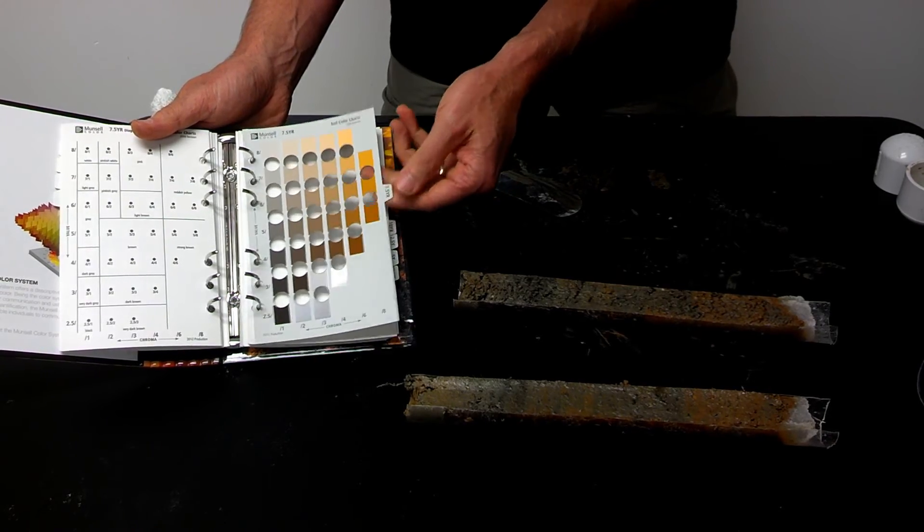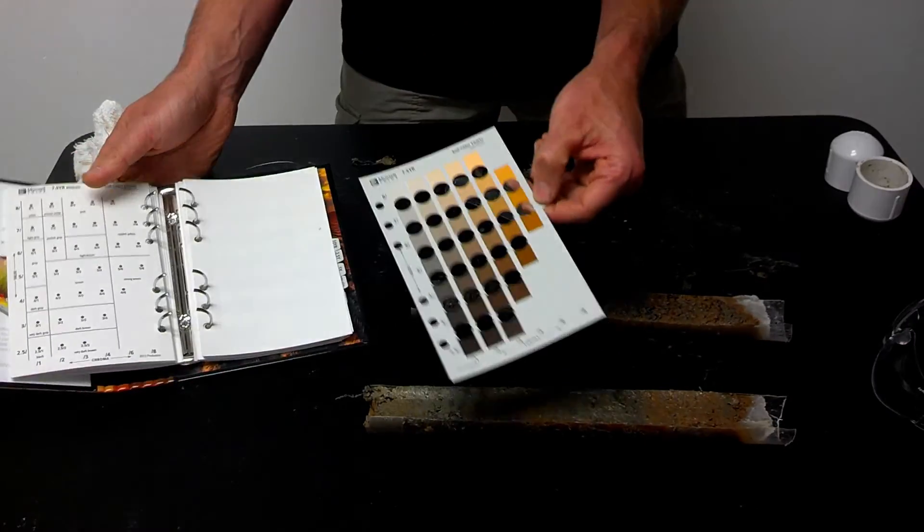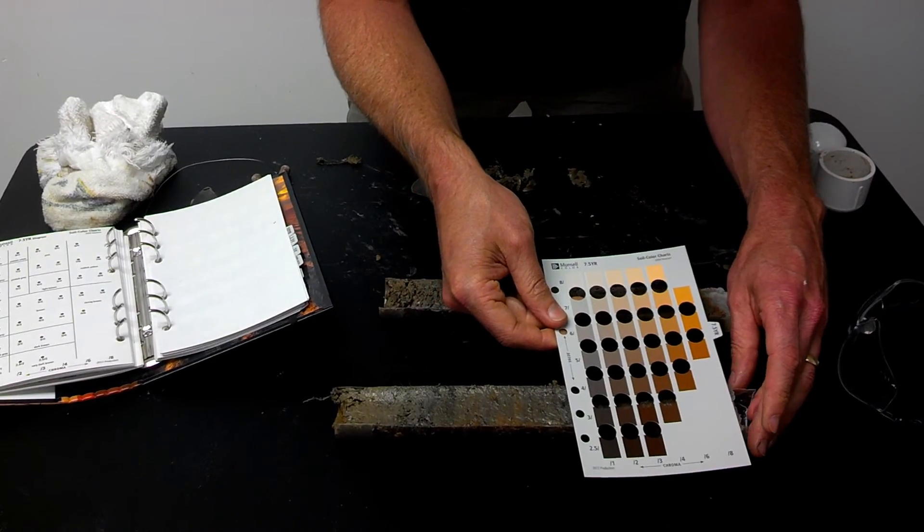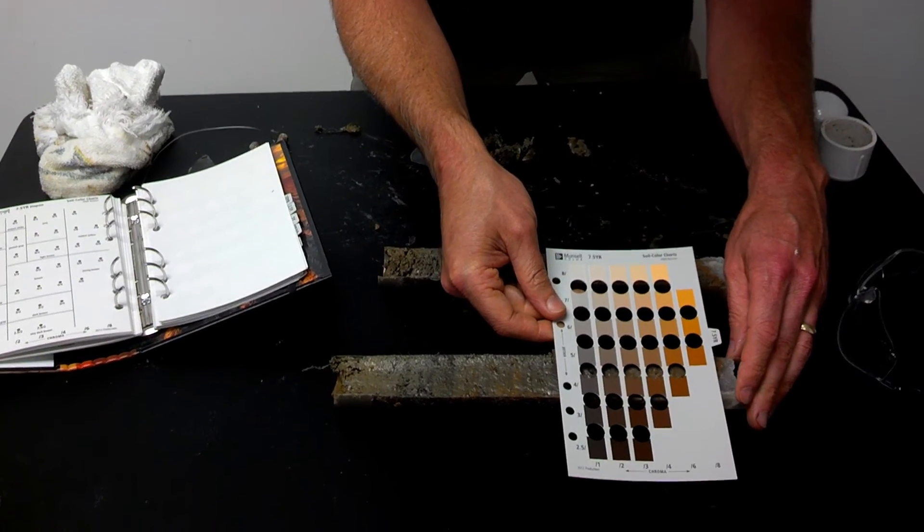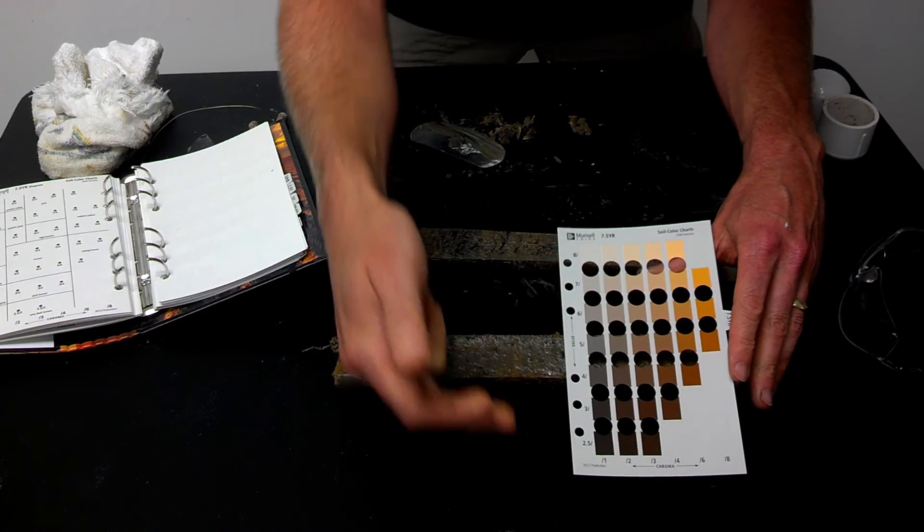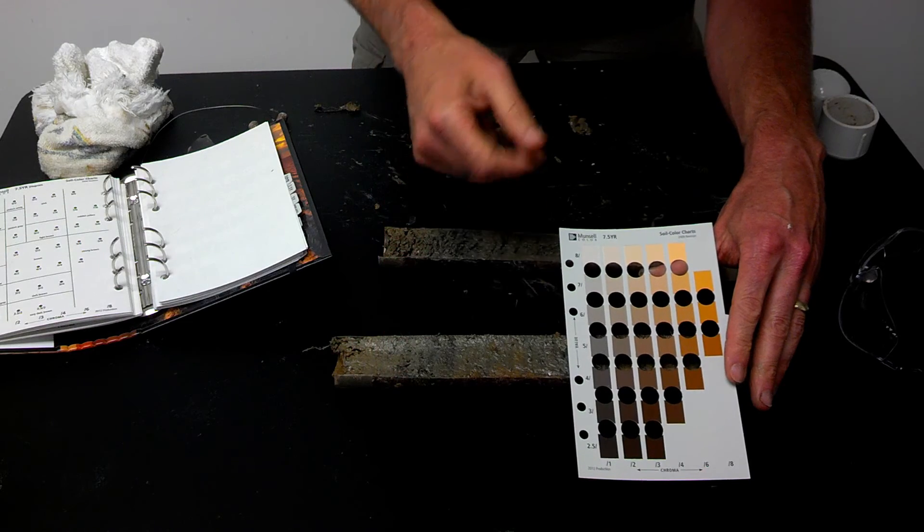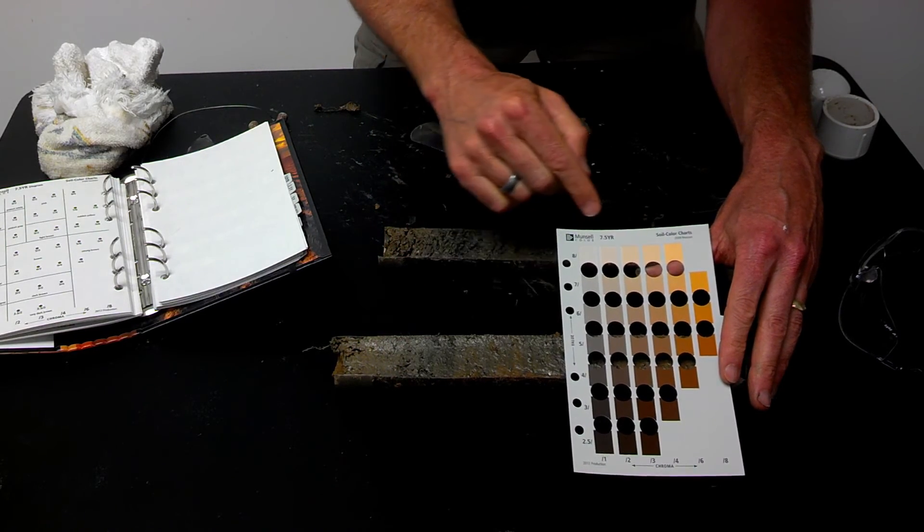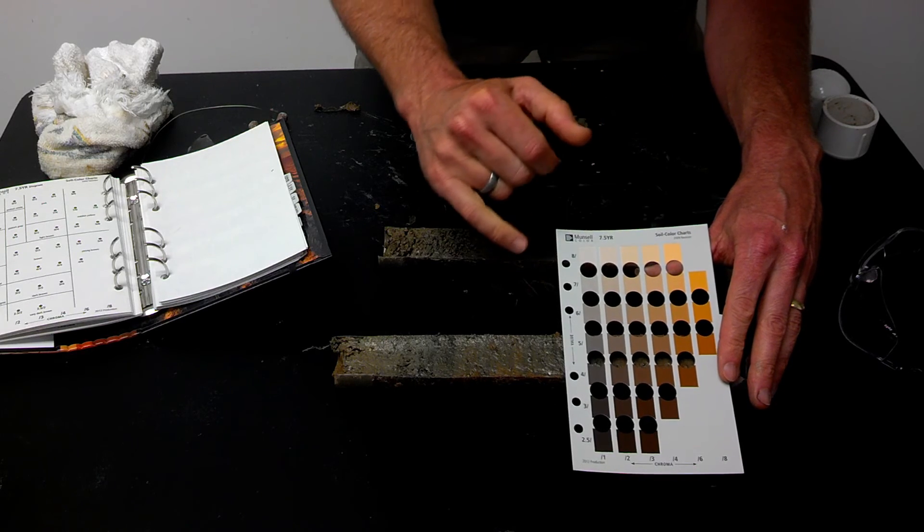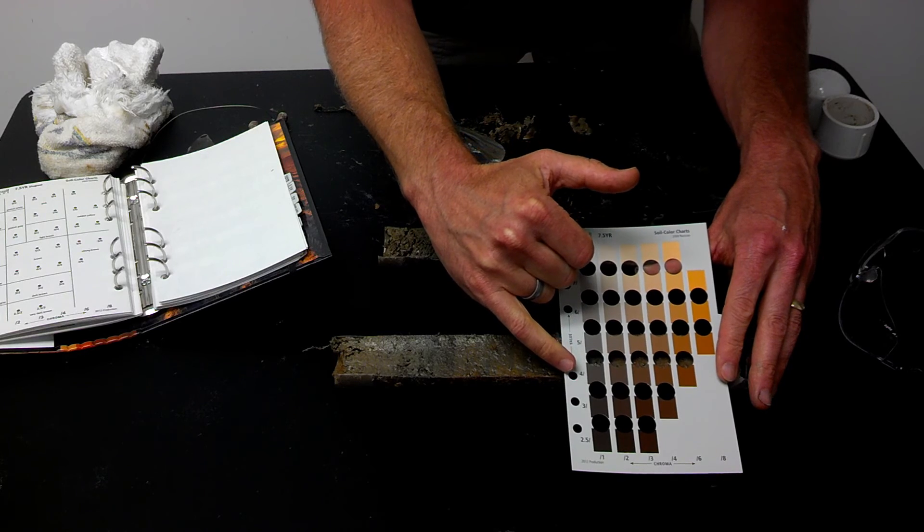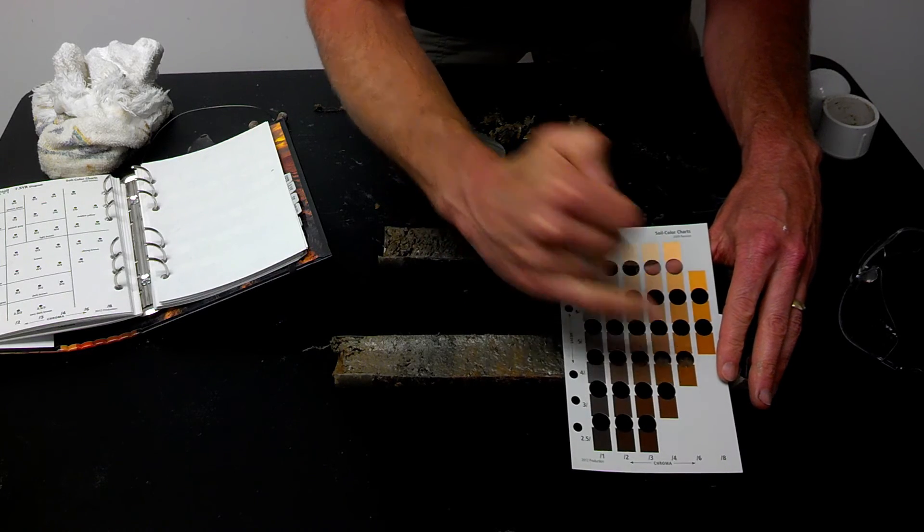It looks about closest to the 7YR color plate. I'll remove this and carefully match the color chips up with the different samples. The chroma is listed on the bottom, the value is listed on the top. I would assess this sample to be something similar to a 7.5YR, a value of perhaps 4, and a chroma of 6.